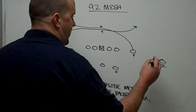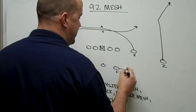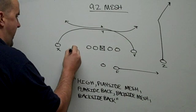Z is going to run a corner route, F is going to run a swing, and H is going to run a shoot route.